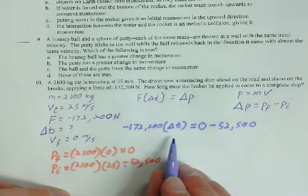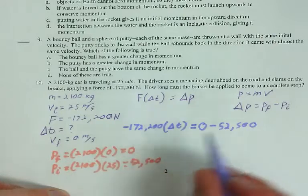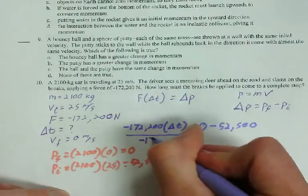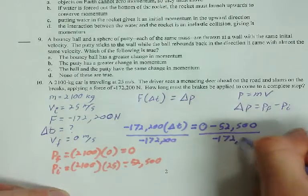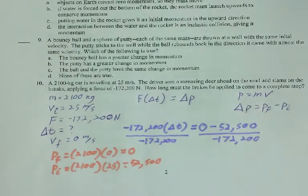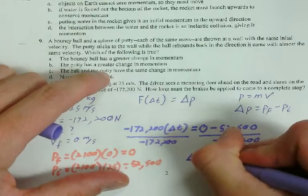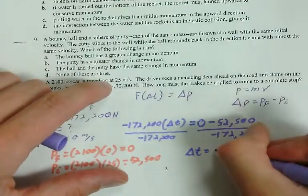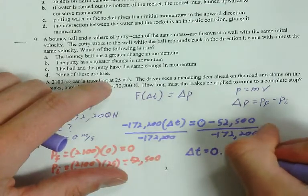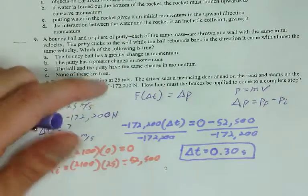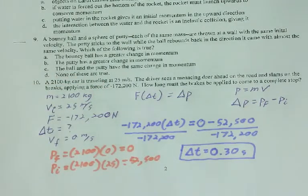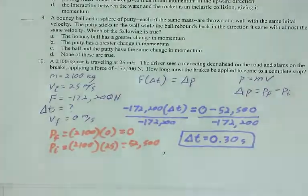We need to get delta T by itself. So, that means dividing the negative 172,200 of both sides. And you get what happens when you let computers pick the numbers. 0.30 seconds. Again, apparently computers think that's how fast you can stop. Because I just let the computer pick the numbers. 0.3 seconds.